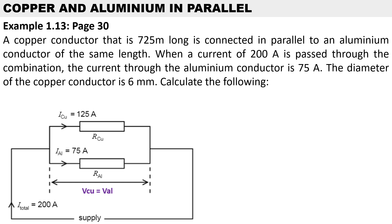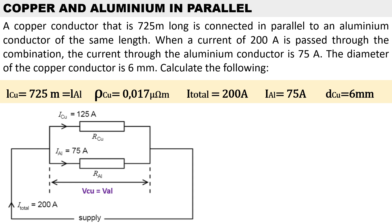In this example taken from our textbook, it deals with two conductors in parallel. A copper conductor that is 725 meters long is connected in parallel to an aluminium conductor of the same length. When a current of 200 amps is passed through the combination, the current through the aluminium conductor is 75 amps. The diameter of the copper conductor is 6 millimeters. The resistivity for copper is 0.17 micro-ohm-meters, total current is 200 amps, and the current through the aluminium branch is 75 amps.